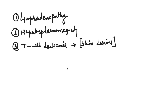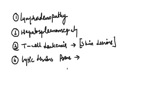Also in T-cell leukemias, lytic lesions occur in the bones — meaning bone-destroying lesions. There will be lytic lesions in the bone, and as a result of these lytic lesions, there will be hypercalcemia. So hypercalcemia is another important potential feature of adult T-cell leukemia.